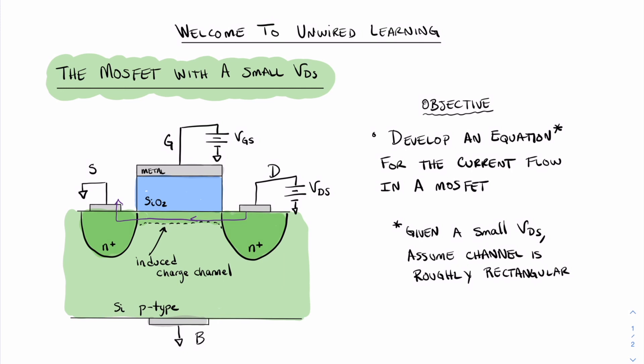The objective of this video is to develop an equation for the current flow in a MOSFET. In particular, what we want is to consider the current flow as it goes from the drain region over to the source region.